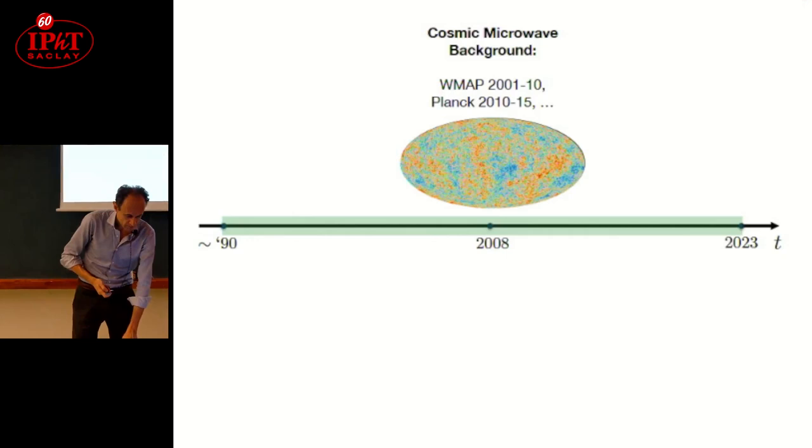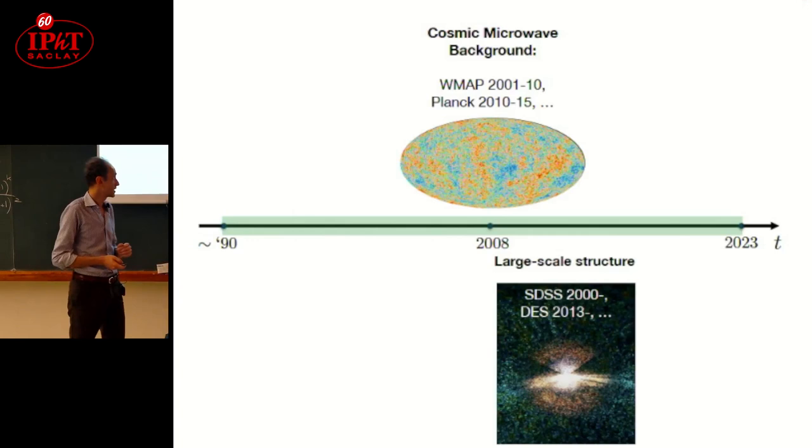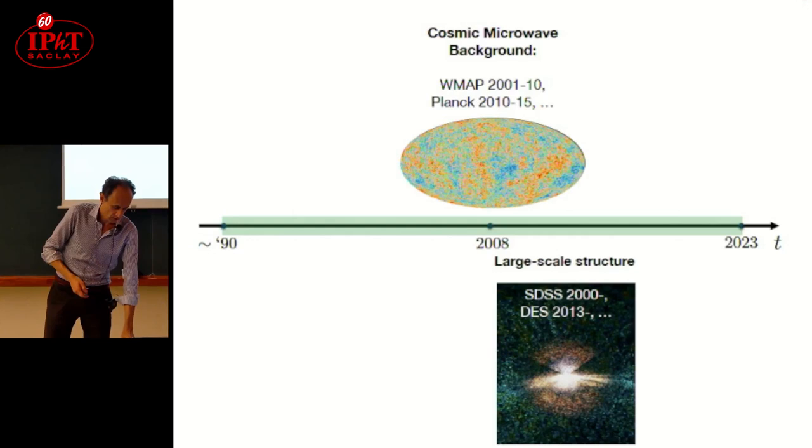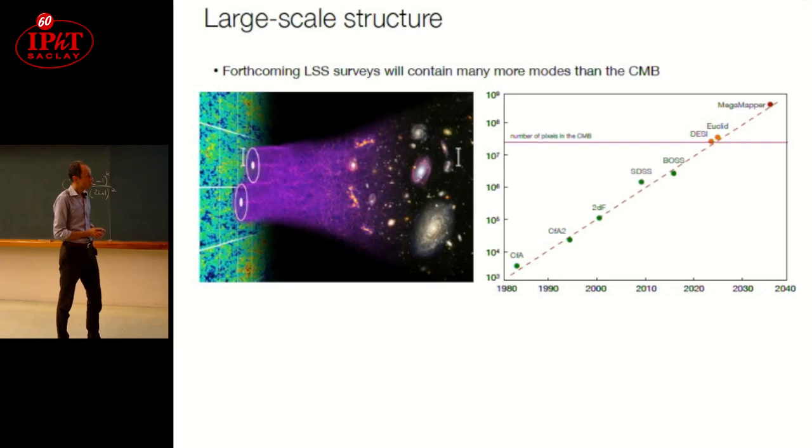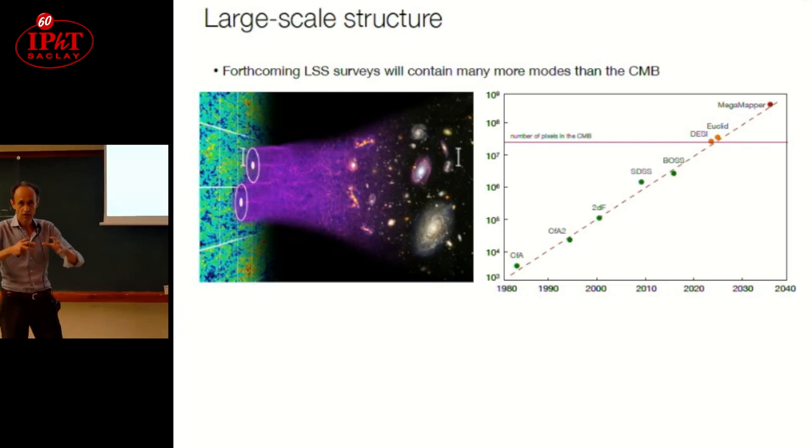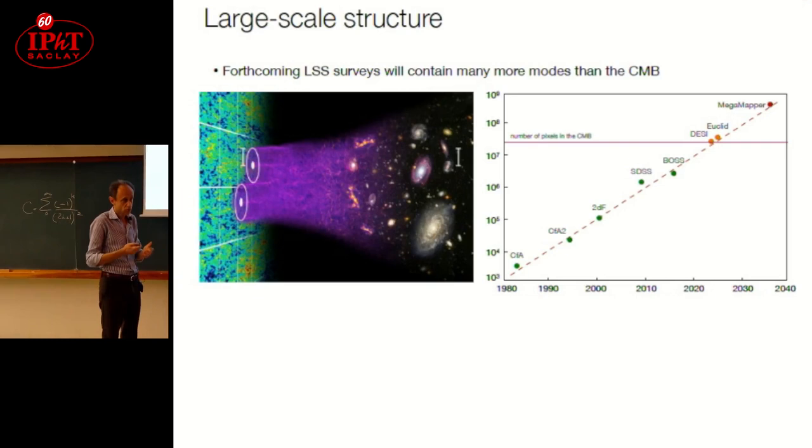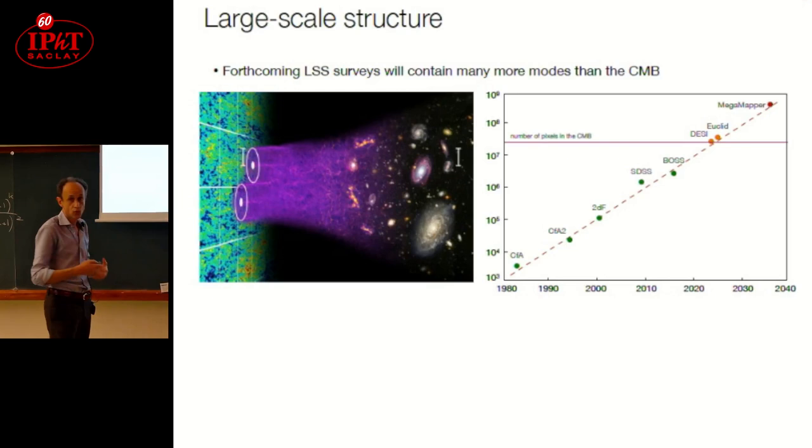From the CMB, I would like to move to another probe which has been very important for cosmology, which is large scale structure. One of the most famous experiments was SDSS, developed also by IFU, and more recently DESI. Why are large scale structure surveys important? The idea is that since large scale structure surveys are three-dimensional, they also probe depth with respect to CMB fluctuations that are purely two-dimensional. The number of modes, the number of pixels or information that you can get from the surveys can become progressively more important than the one that you can find in the CMB.